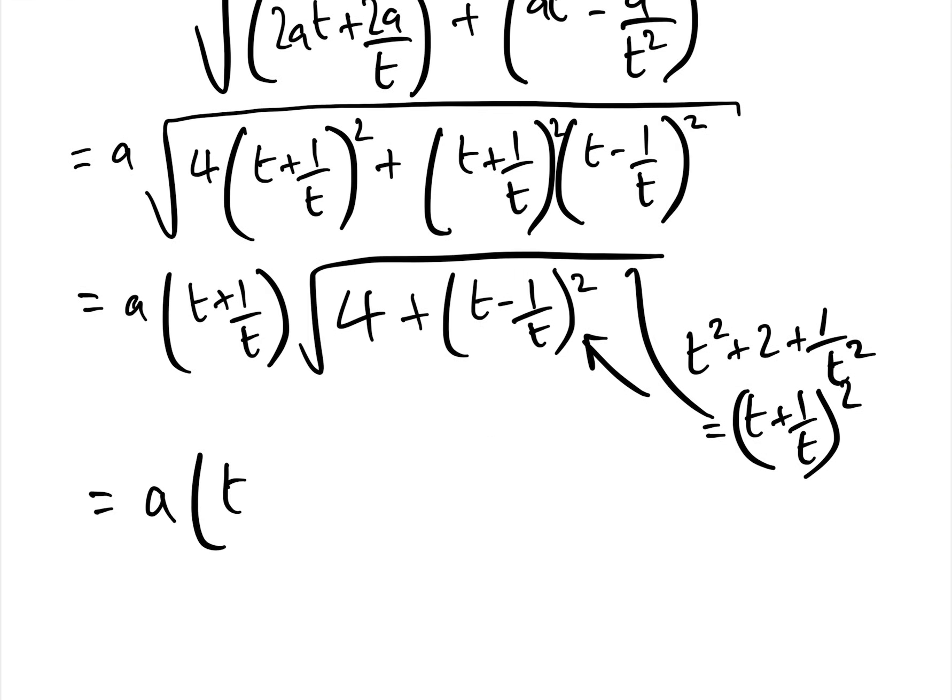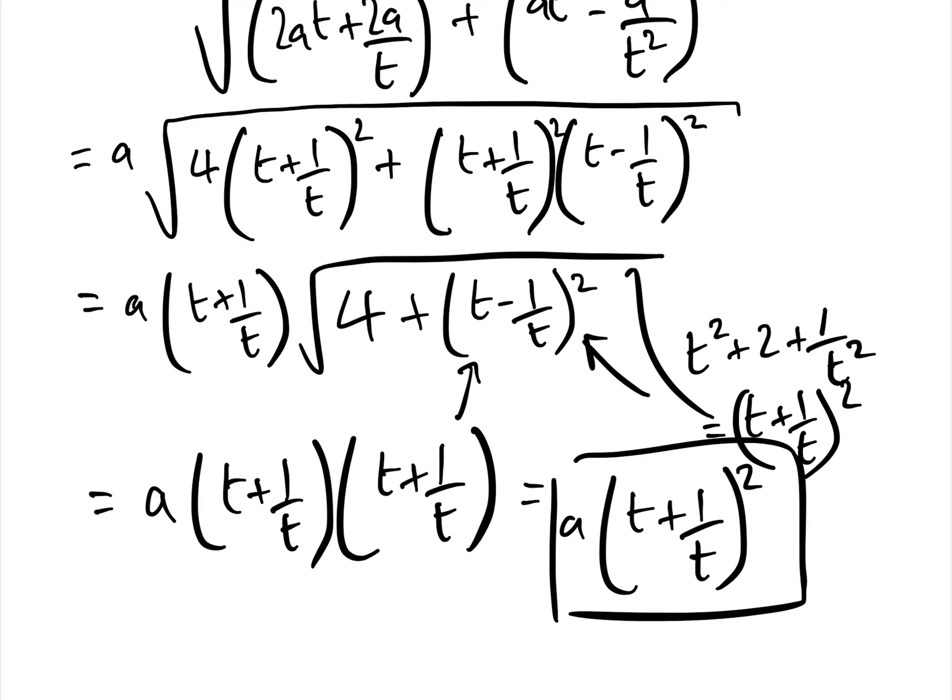and then when we take the square root of it, we get a solution of a times t plus 1 over t times t plus 1 over t, which is that bit, which equals a times t plus 1 over t squared. And that is a beautiful little equation to remember the length of a focal chord.